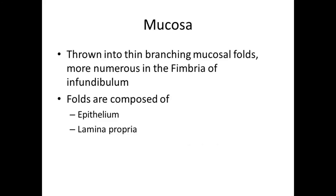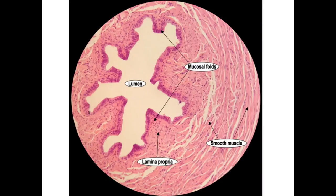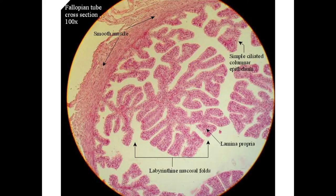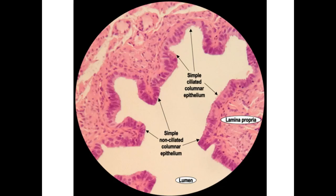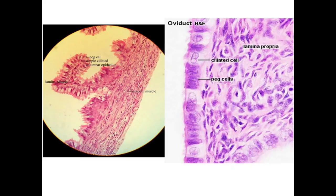The mucosa is thrown into folds composed of epithelium and lamina propria. This H&E stained slide shows mucosal folds. The section at the level of the fimbria has the most extensive mucosal folds. The mucosa consists of simple columnar epithelium with two types of cells: darker staining secretory cells called peg cells, which secrete tubal fluid, and ciliated cells, which are numerous. The lamina propria consists of loose connective tissue. These slides clearly show peg cells and ciliated cells.